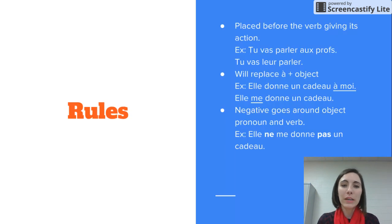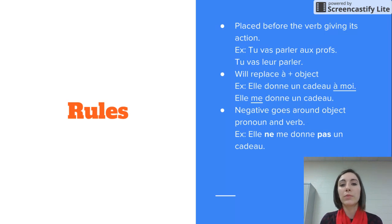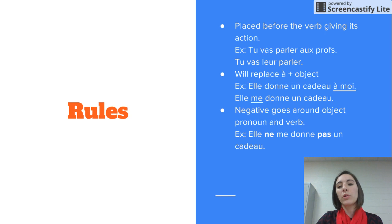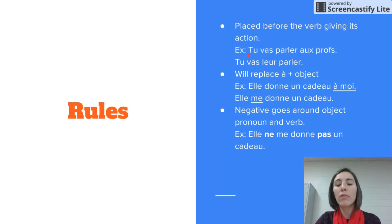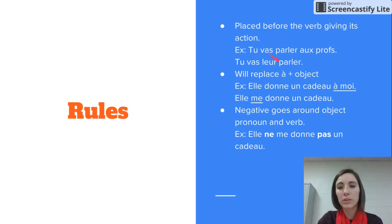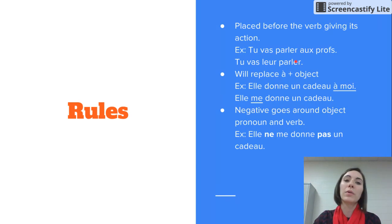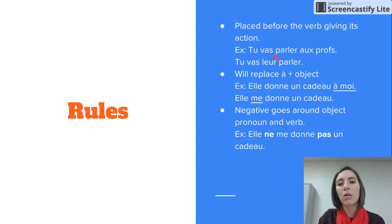There are some rules we need to follow. Our indirect object pronouns follow the same rules of placement as direct object pronouns, except we're doing it with indirect objects. The pronoun is placed before the verb giving its action. For example, tu vas parler au prof — you are going to speak to the teachers. When replacing au prof, which is à plus a person, we say tu vas leur parler, putting leur before parler.